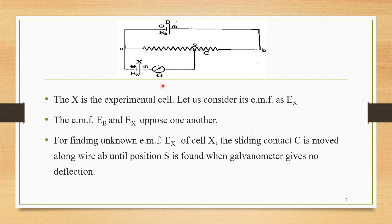The next important part present in this setup is X, the experimental cell. For this cell, we are interested to measure the EMF, which is designated as EX. There are two types of cells in this setup: one is the storage battery B and second is the experimental cell X. The EMFs EB and EX oppose one another.